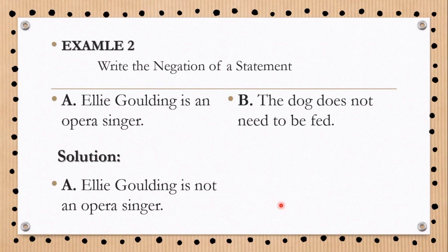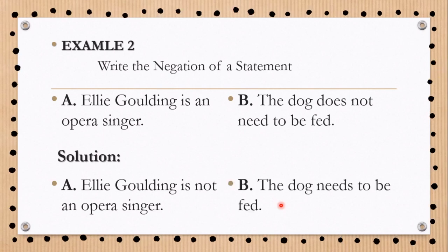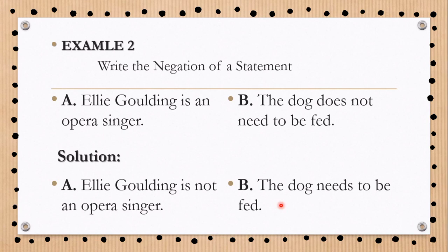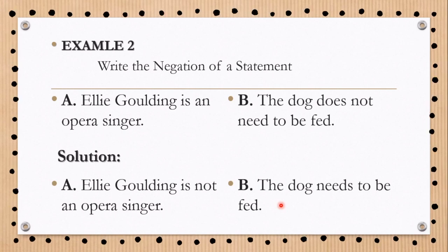As we see, we add the word 'not' as the negation. Next, B: The dog does not need to be fed. Solution: The dog needs to be fed. We can see the word 'does not' has been removed.